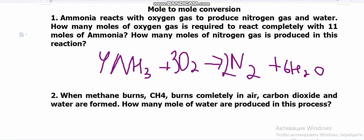The question asks: how many moles of oxygen gas are required to react completely with 11 moles of ammonia? In the equation, what you see are coefficients. Previously we taught students that coefficients represent the number of atoms, molecules, or formula units — but today we will see that these coefficients represent moles. So 4 moles of NH₃ reacts with 3 moles of oxygen, giving 2 moles of N₂ and 6 moles of H₂O.